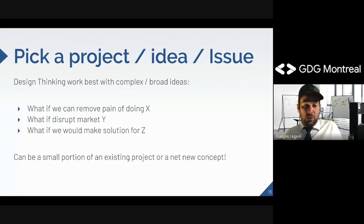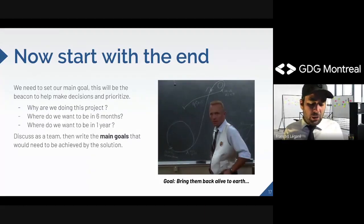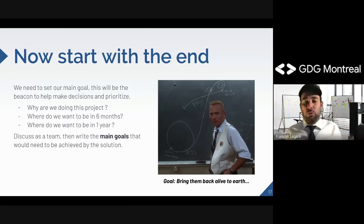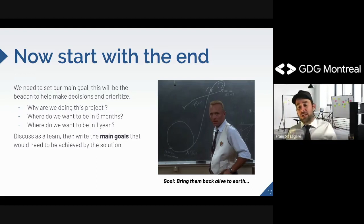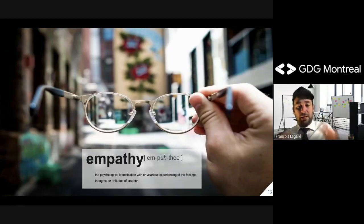To get started, pick an issue. It needs to be complex — not too easy, because there are more efficient processes for simple things. The first thing to do is start with the end: what's the main goal? Why are we doing this? Where do we want to be in six months or a year? Write it in big bold fonts in the room or virtual room, in all the invites — keep it as a beacon of where we're going. Agree as a team on the end goal, set your mindset on reaching it, and always validate whether you're aiming in the right direction.